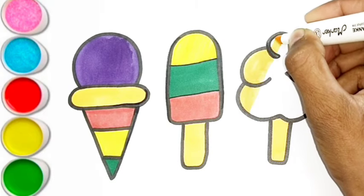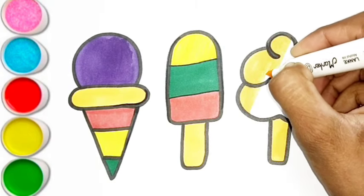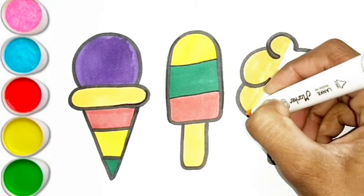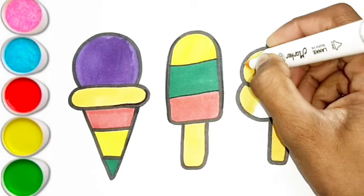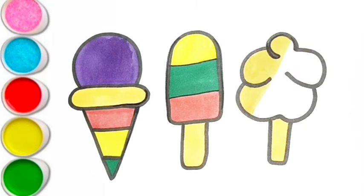G is for goat. G, g, goat. H is for hand. H, h, hand.